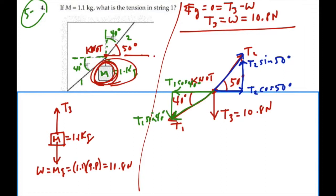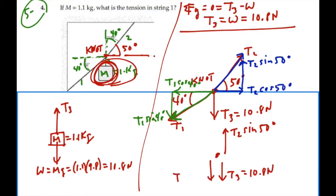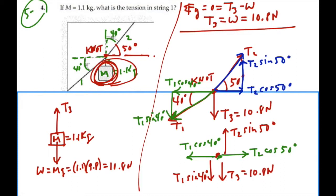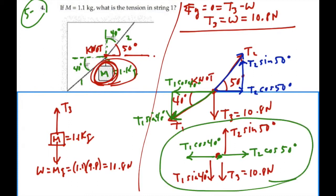We can now draw a component free body diagram for the knot. We have T2 sine 50 degrees going up, tension 3 going down equal to 10.8 newtons, and T1 sine 40 degrees also going down — that's the y direction. In the x direction, we have T2 cosine 50 balanced by T1 cosine 40. That is our component free body diagram.